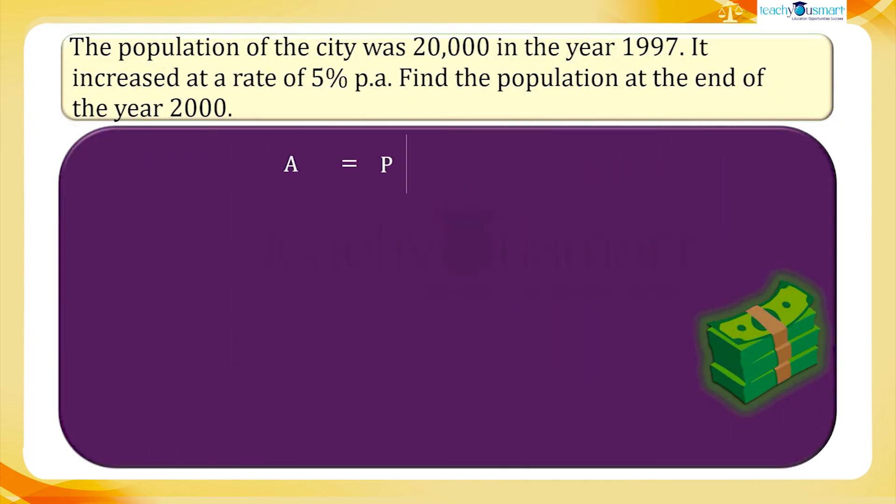Therefore, the population at the end of 2000, A equals P multiplied by 1 plus R by 100, the whole raised to n, equals 20,000 multiplied by 1 plus 5 divided by 100, the whole raised to 3.